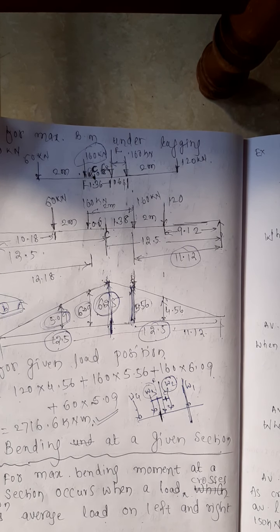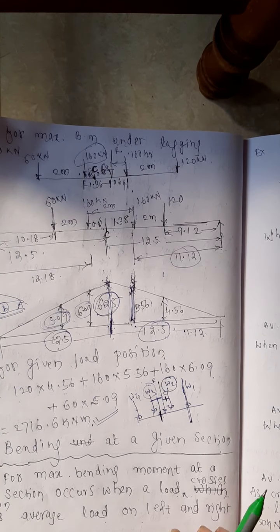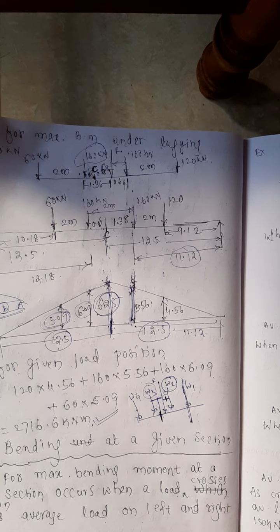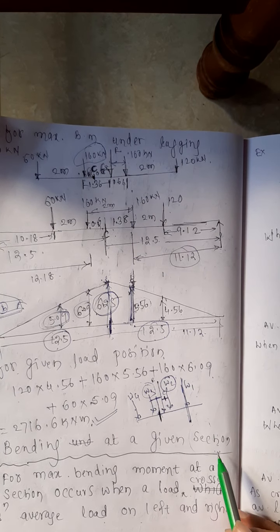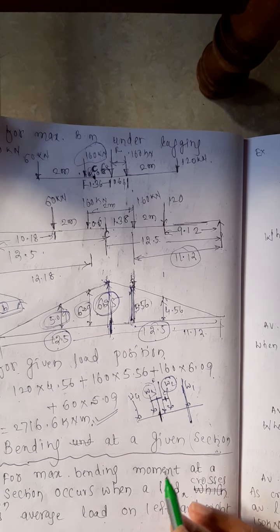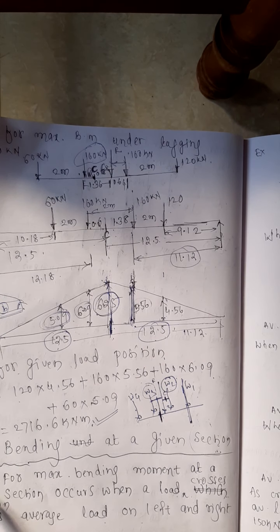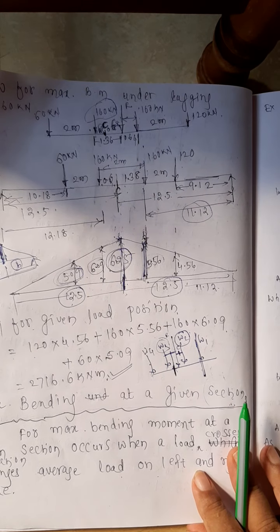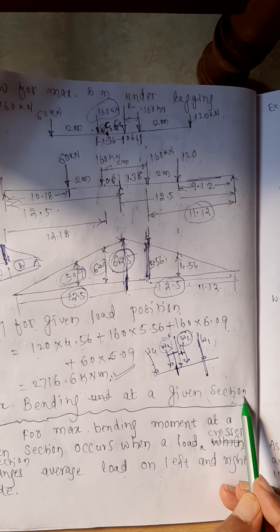Now we are going for the second category of problem, wherein we want the maximum bending moment at a given section. Here the section is given to you earlier — the section when you want under the given load, by default it will be at the center of the beam. Now he has given you the section; at that section he wants the maximum bending moment. Most of the cases he is asking this particular category of problem in the examination. That is why you must study it very carefully. First we see what is the condition for maximum bending moment at a given section.